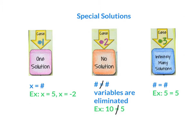Special solutions. In case number 1, we end up with one solution — this is when x equals a number, for example x equals 5 or x equals negative 2. In case number 2, we have no solution — this is where a number does not equal a number; the variables are eliminated, for example 10 does not equal 5. Case number 3 is infinitely many solutions — this is where a number equals a number, for example 5 equals 5 or 4 equals 4.